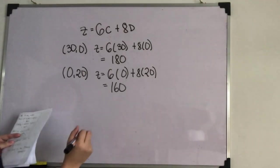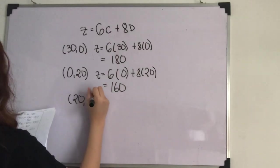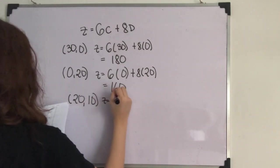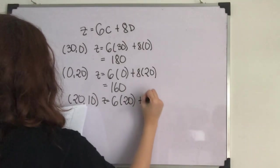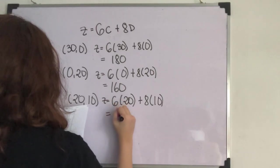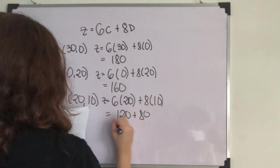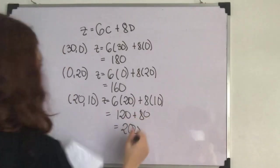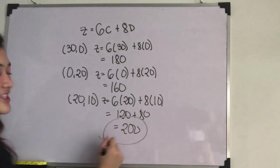And last but not the least, we will try 20 and 10. Z is equal to 6 times 20 plus 8 times 10, which will give us 120 plus 80 with a total of 200. And as you can see, 200 is the highest of them all.